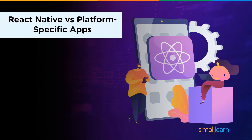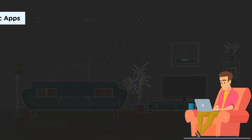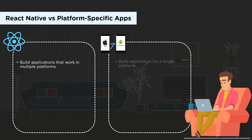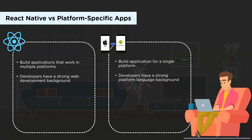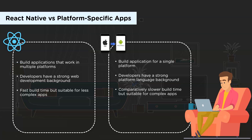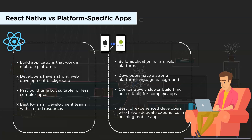Let's look at the differences between React Native applications and platform-specific applications. React Native applications work on multiple platforms, while platform-specific applications are built for a specific platform only. React Native developers typically have a strong web development background, while platform-specific developers have a strong platform language background — Swift for iOS and Java for Android. React Native has a faster build time but is less suitable for complex applications, whereas platform-specific applications have a slower build time but are suitable for complex apps. React Native is best for small teams with limited resources, while platform-specific development is best for experienced developers building complex mobile apps.